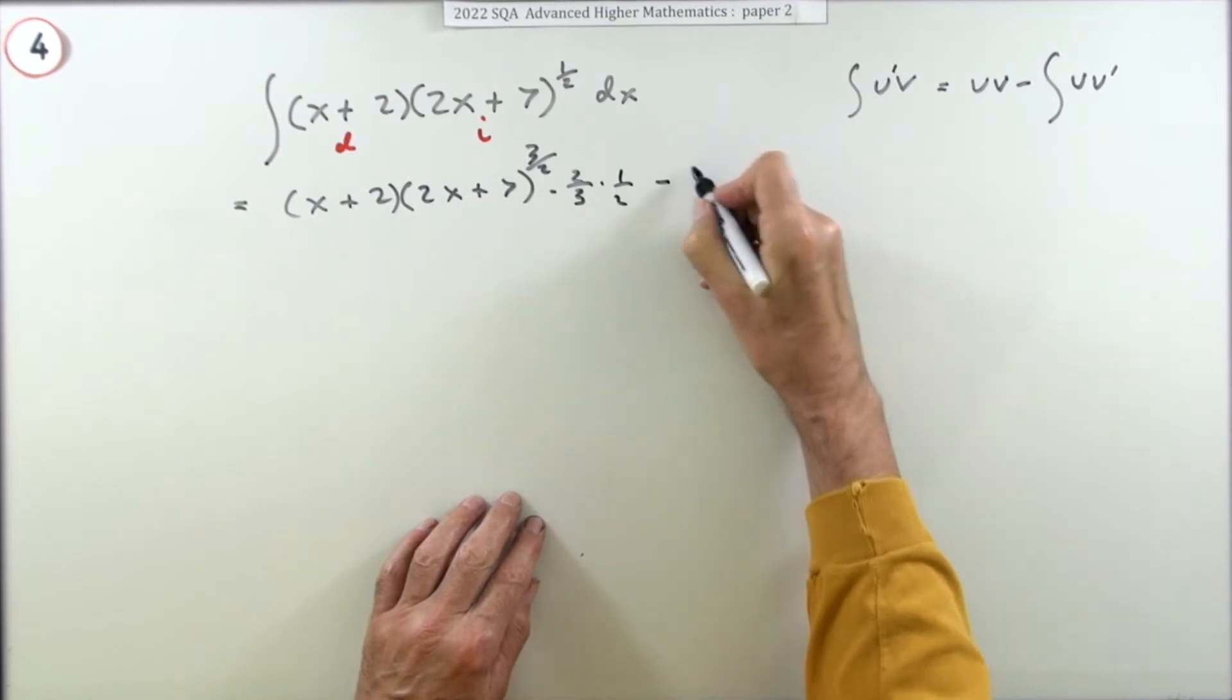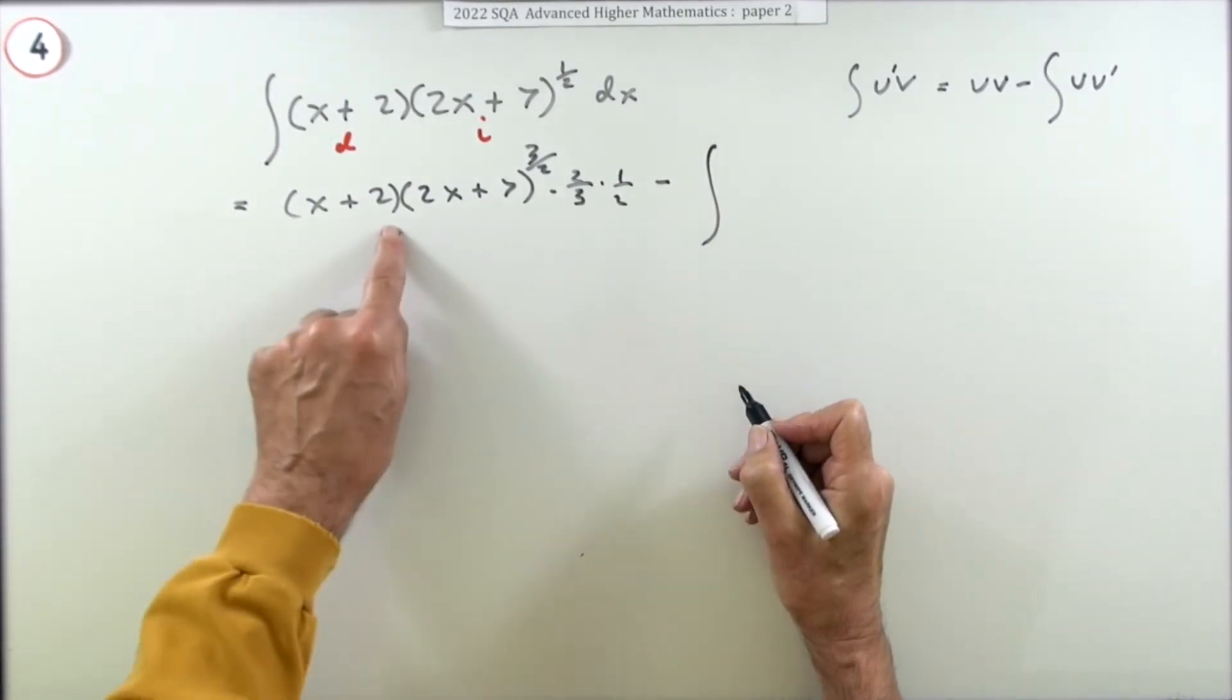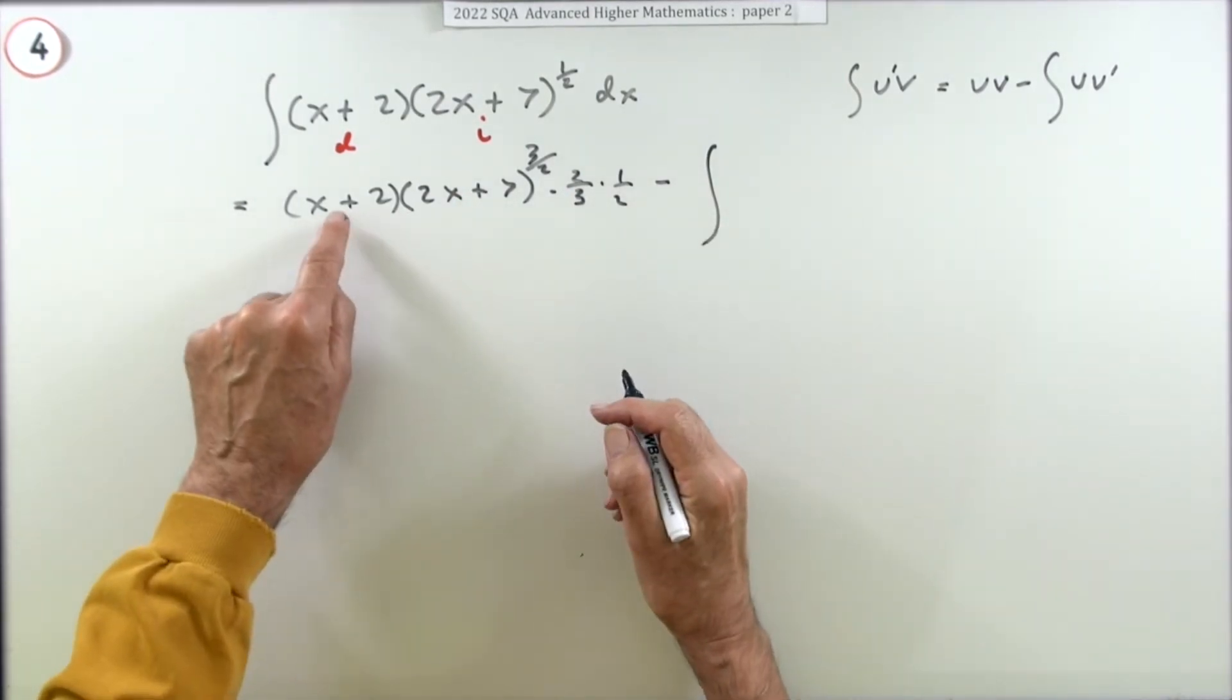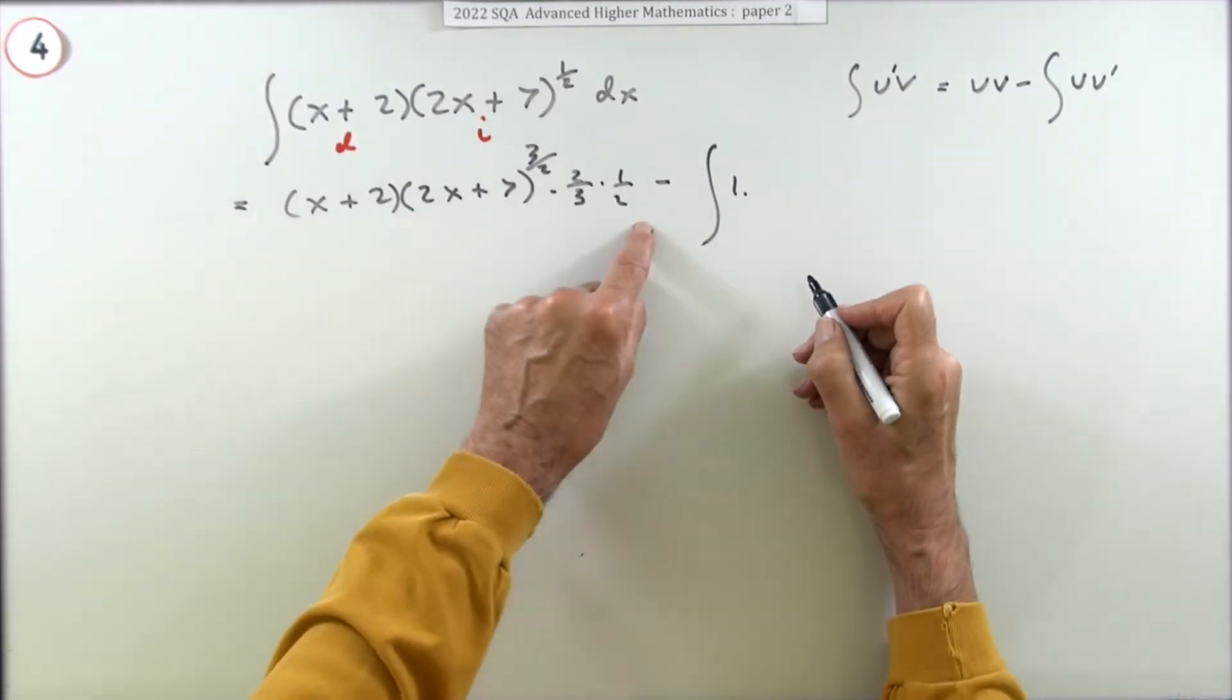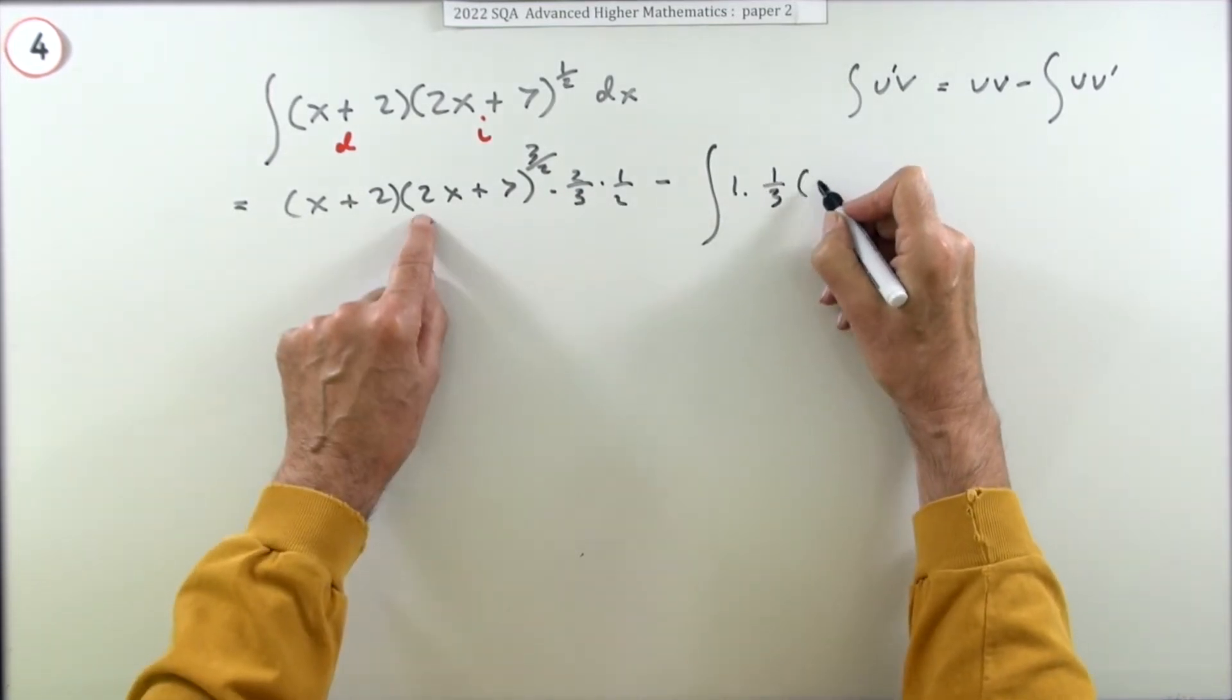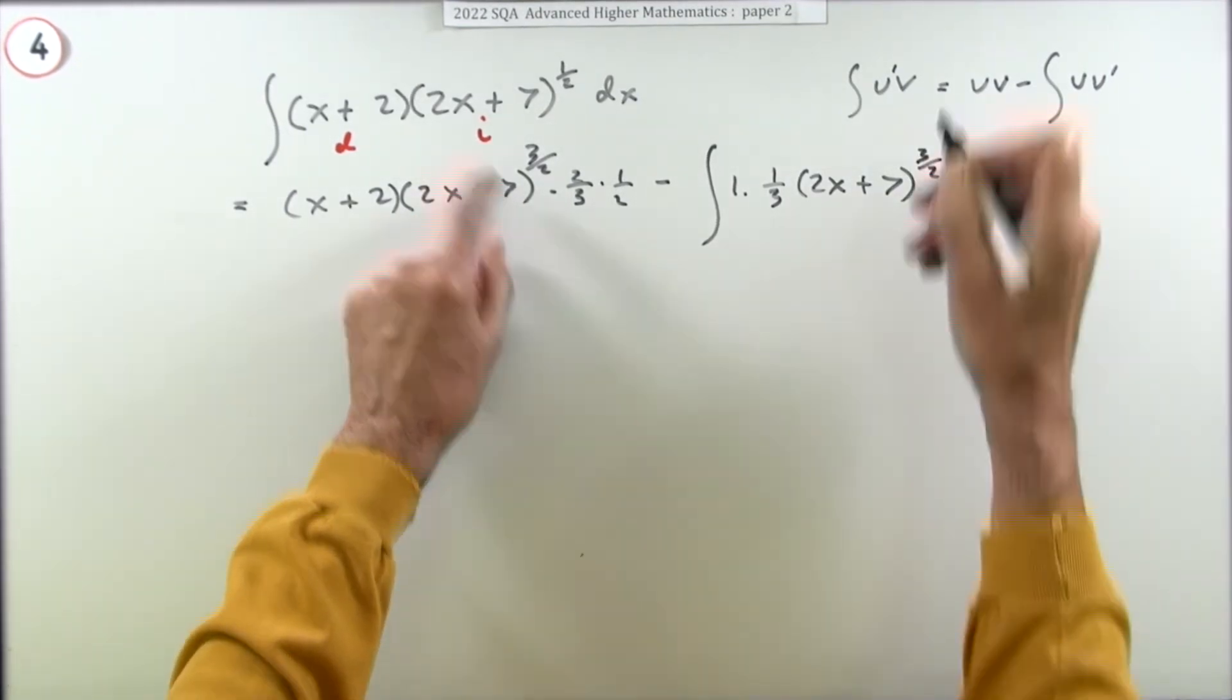But also divide by the derivative of that inner part, so also times a half. Minus now the integral of - now that's been done, this big bundle here that's going to get copied into here, but I'll do a bit of simplification before I put it in. Now differentiate this one - well that just goes down to a one. I'll show that by putting one times, even though it makes no difference. Now just copy this down. Well that's just a third of (2x + 7) to the power 3 upon 2 dx.